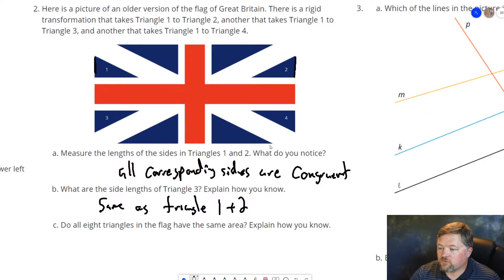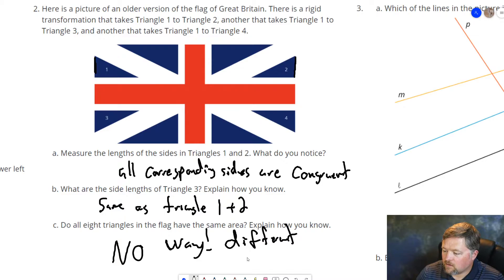Do all 8 triangles in the flag have the same area? Well, triangles 1, 2, 3, and 4 do because they're all congruent to each other. Because there was a transformation that took us from 1 to each of the others. However, the other 4 triangles on here are larger. Those are definitely going to have a larger area. Do all 8 triangles have the same area? No way. How do you know? They're different sizes. You can tell that just by looking at these two triangles here are different.